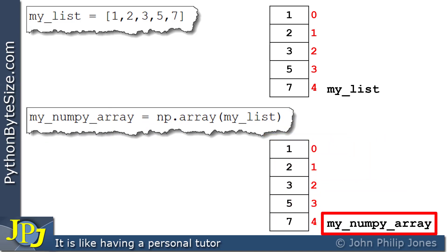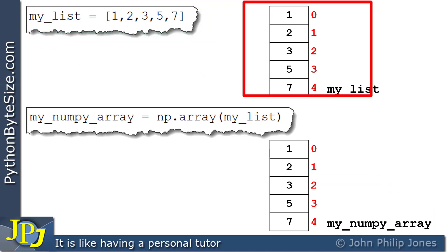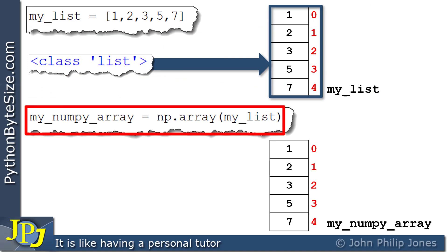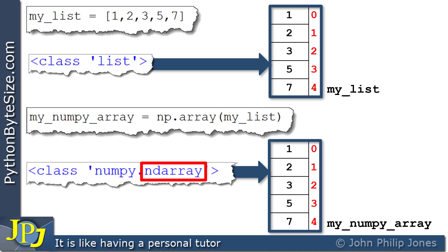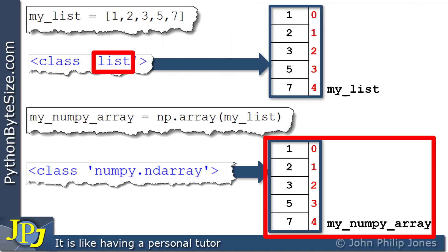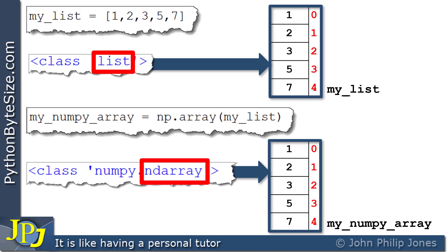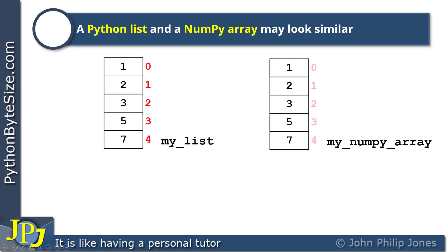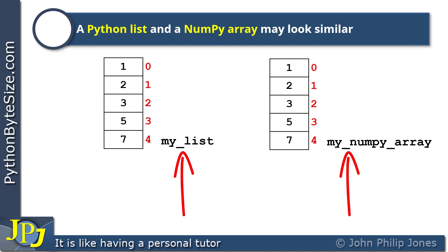The program statement producing a Python list is based upon the list class, and the statement producing a NumPy array is based on the ndarray class. So you have two schematic diagrams that superficially look the same, but one is based on the list class and the other on the ndarray class. A Python list and a NumPy array may look similar — they have contents, an index, and a name — but this superficial look belies the fact that they are based on entirely different classes.